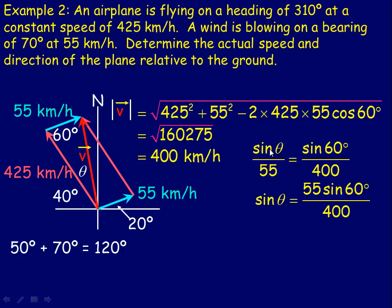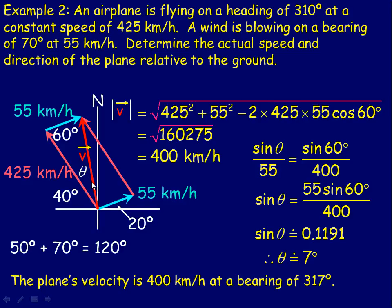So simplifying or isolating sine theta, it would be the product of 55 and the sine of 60 divided by the 400. If we evaluate this, we get 0.1191, and we'll take the arc sine or inverse sine of 0.1191, and we'll get theta to be about 7 degrees. So the bearing is, remember that was 310 plus another 7 would be 317. So the plane's velocity, the actual velocity relative to the ground is 400 kilometers per hour and at a bearing of 317 degrees. If the plane's pilot actually means to go in this direction, then they're actually 7 degrees off course.